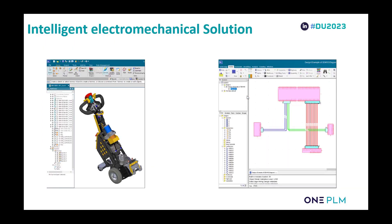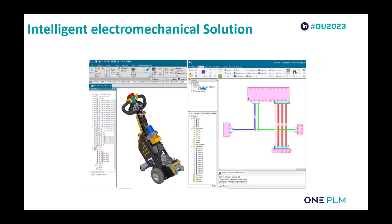Siemens is looking at an intelligent electromechanical system. We want to join the mechanical world with the electrical world and link the two together, so that as one makes a change the other can see it. As long as they're on the same network, they'll be able to collaborate — no longer working in silos, no longer working on disparate systems.